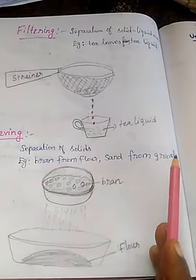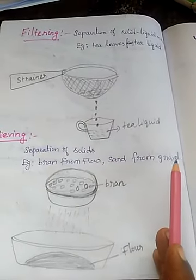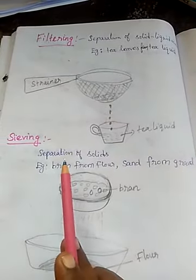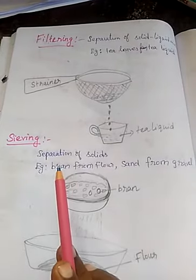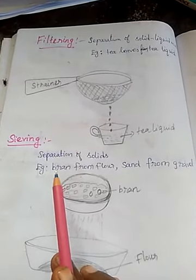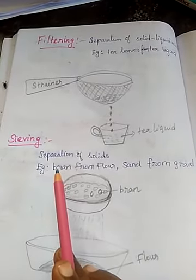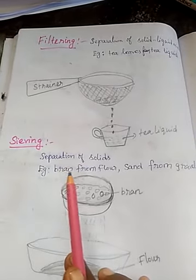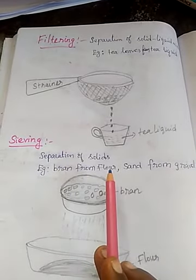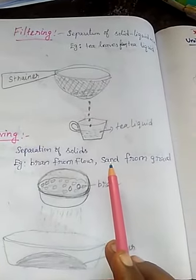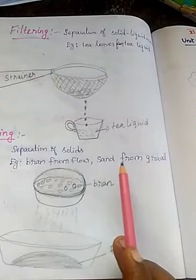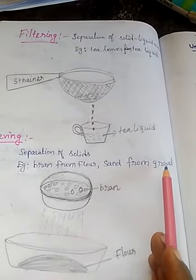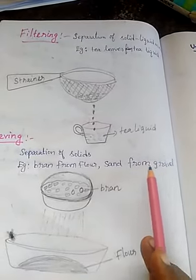What is gravel? Very small rounded stones. What is bran? The outer skin of grain. So bran is separated from flour, and another example is sand from gravel.